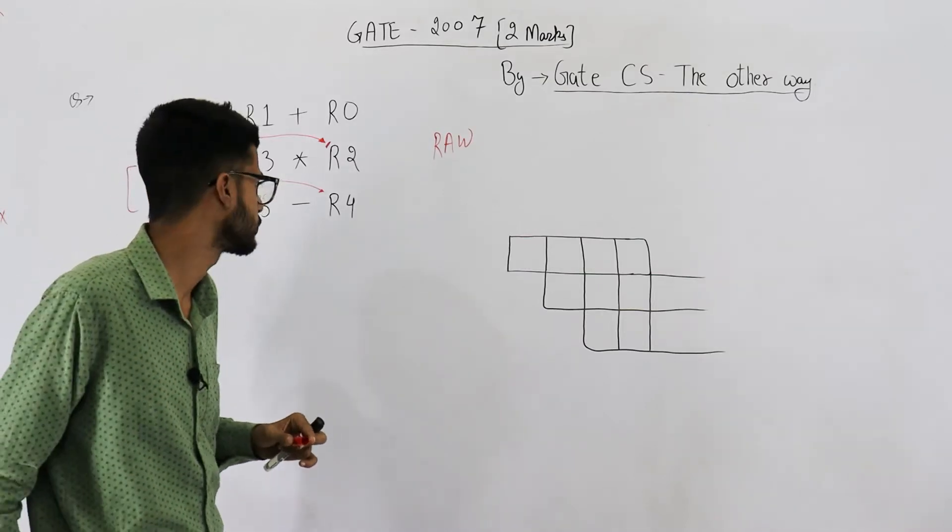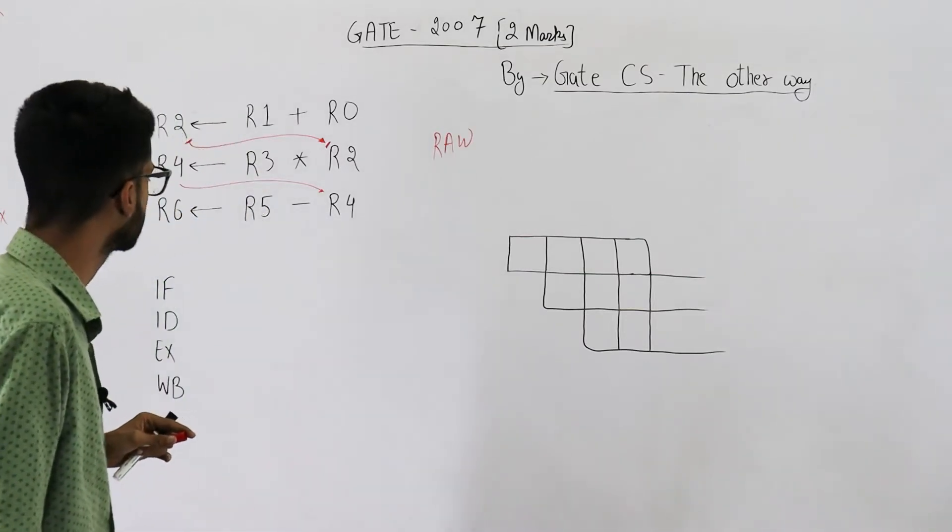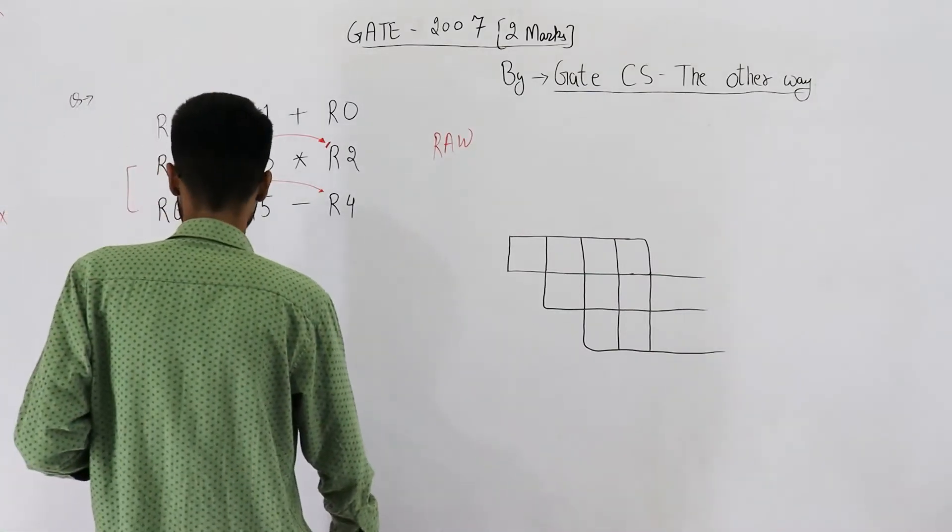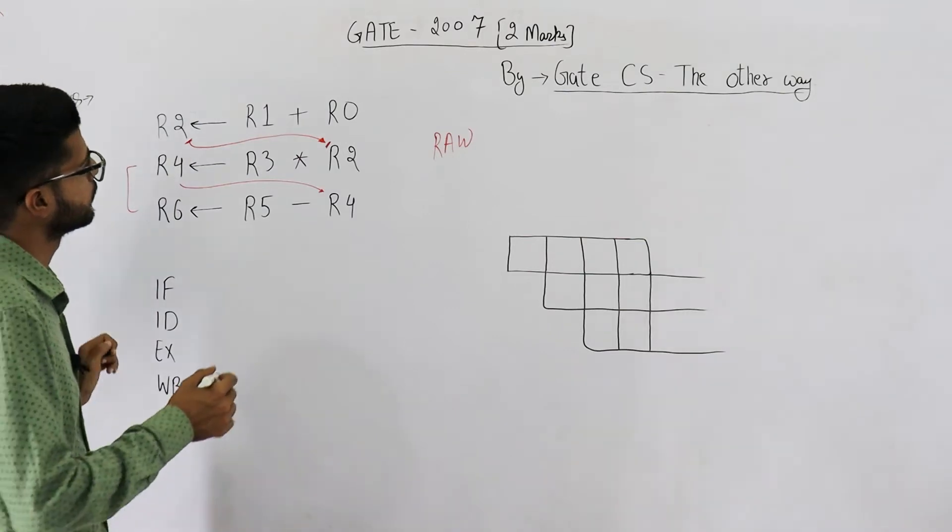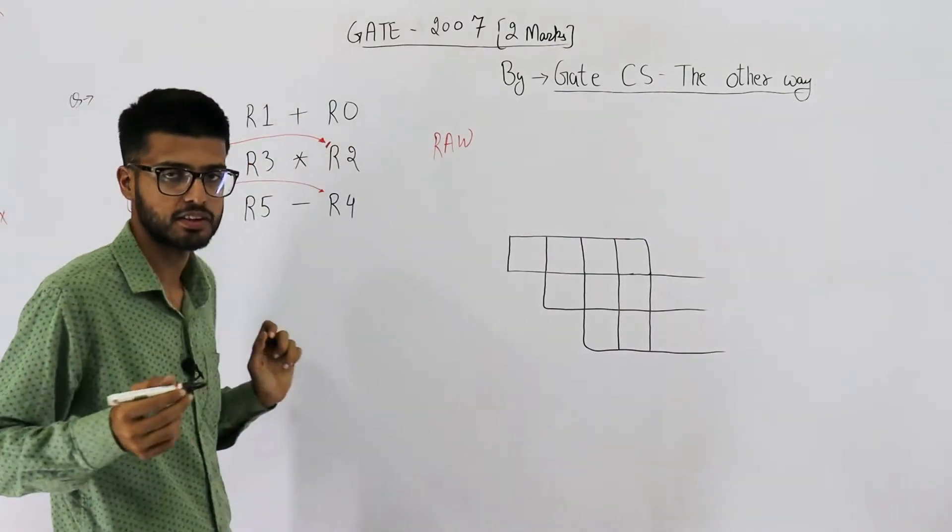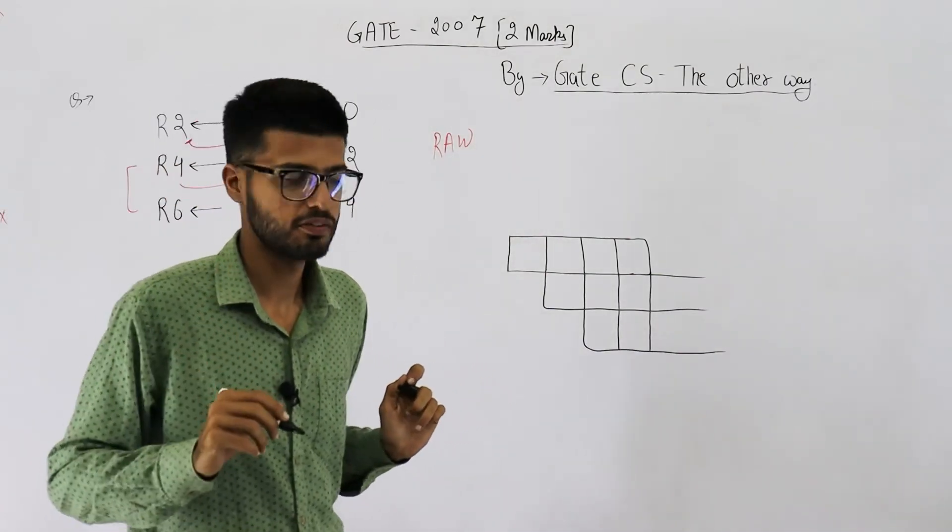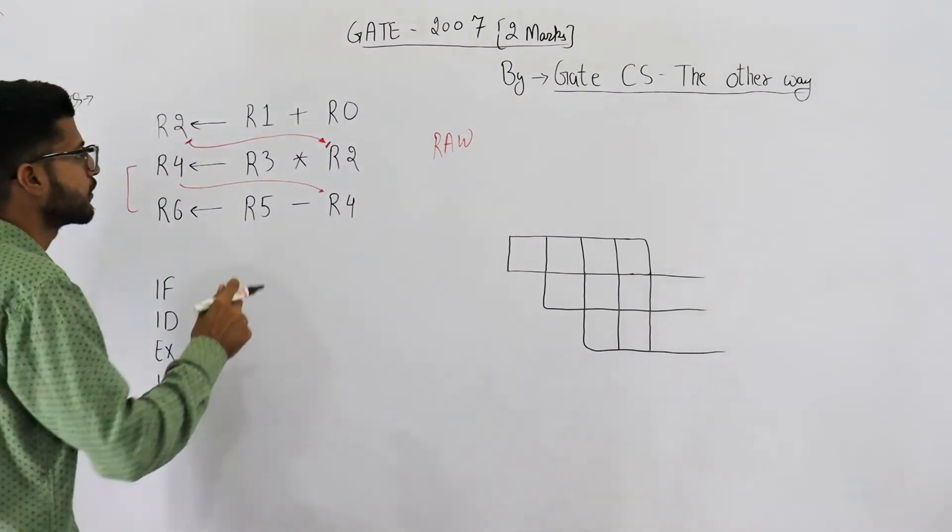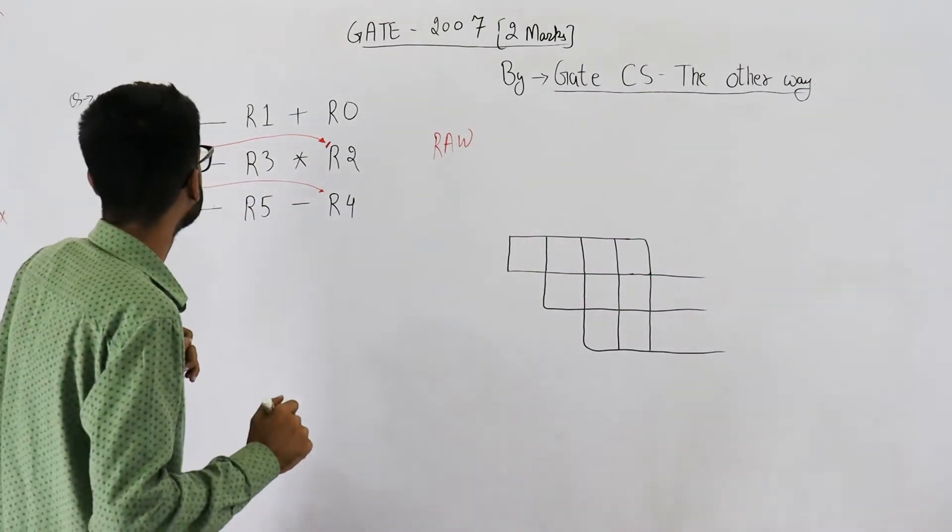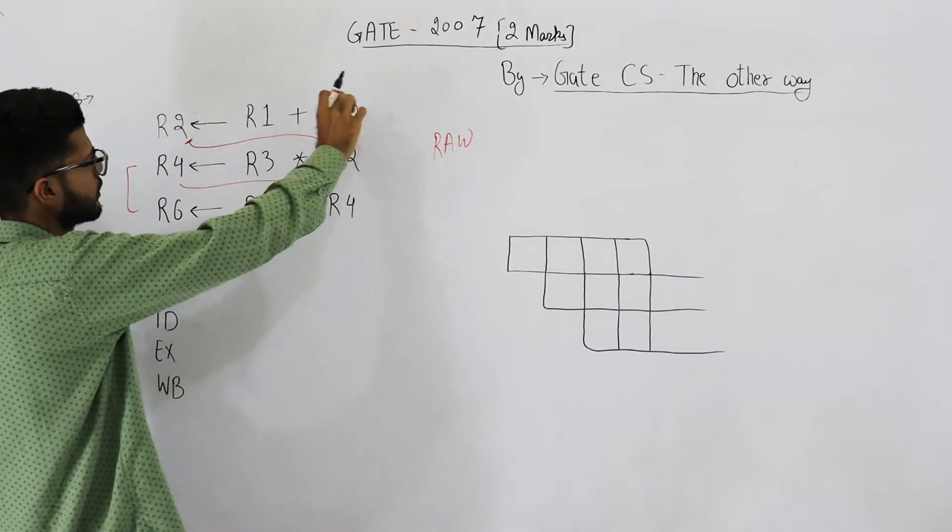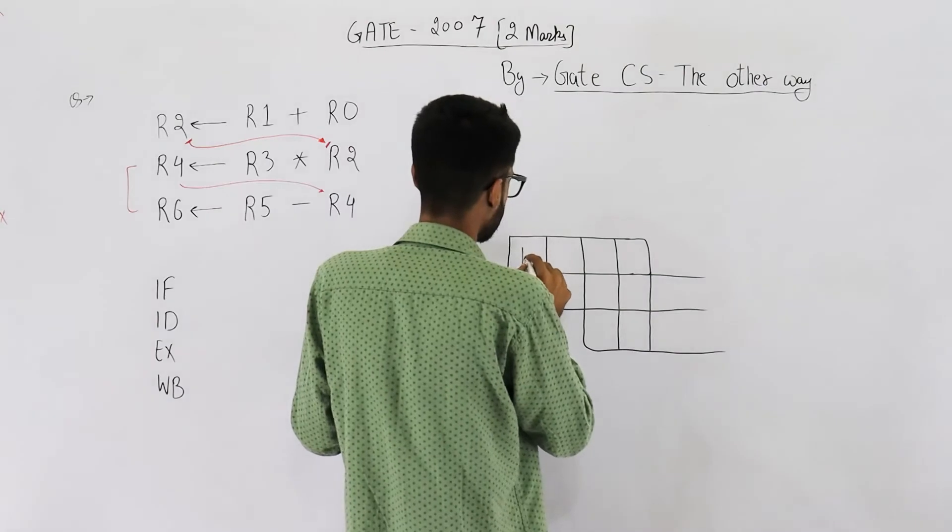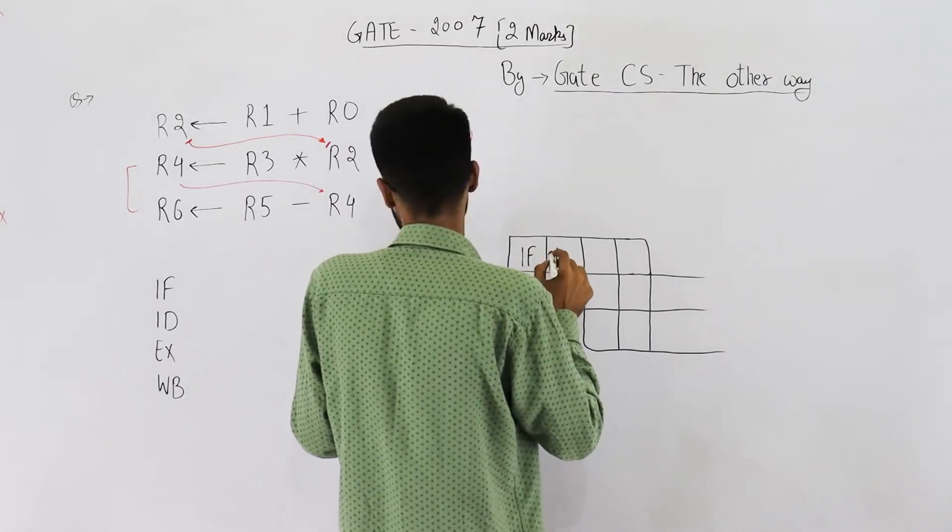Now let's just try to see how many cycles are required. They're saying for plus and minus kind of operations, execute stage needs only one clock cycle, but for multiplication the execute stage needs three clock cycles. So first of all let's see this first instruction. It is an addition instruction, so execute is going to require only one clock cycle.